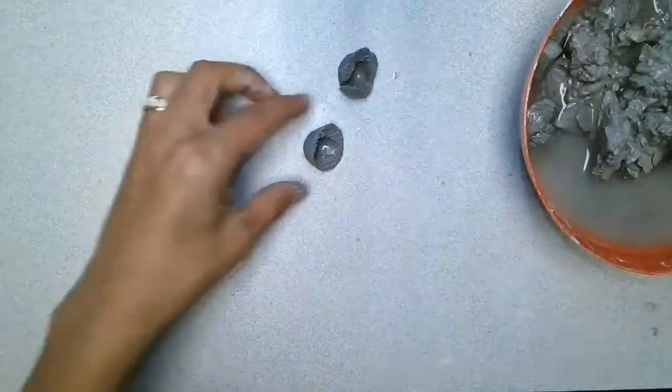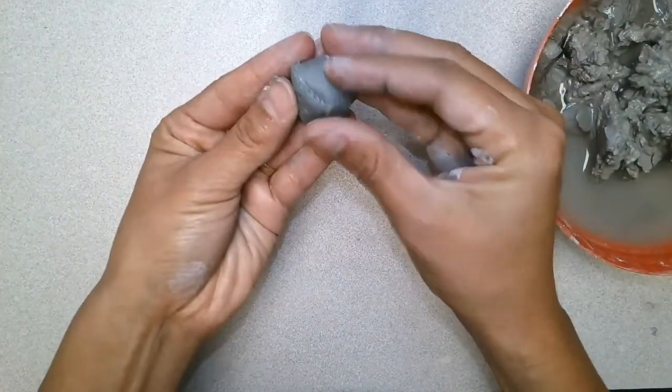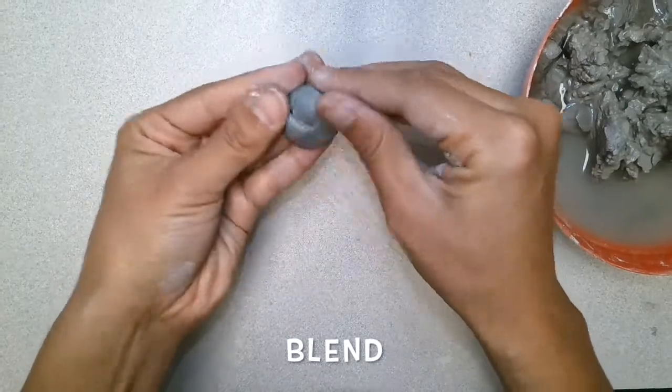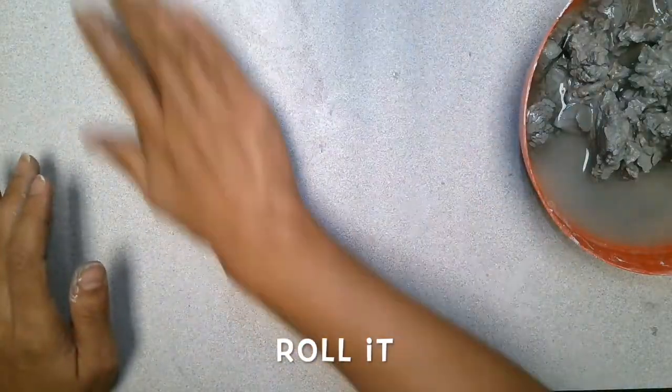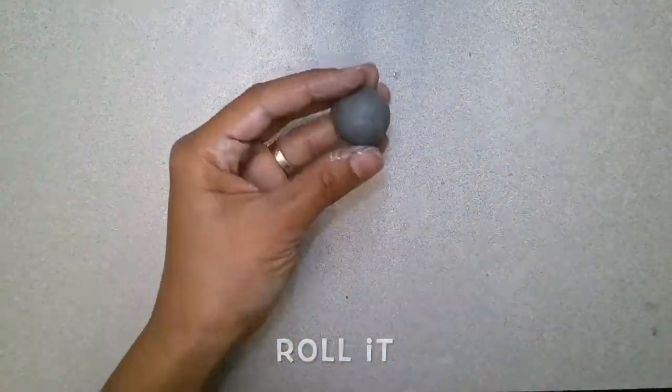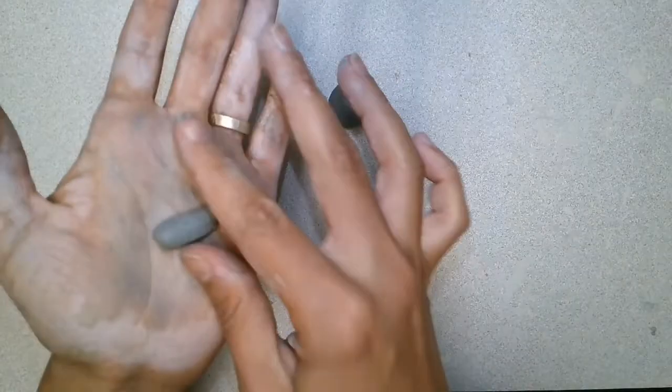Then I will create some pressure to stick them together and blend away the seam. I'll roll them in my hand to make them a little bit more round, and for good measure on the table as well.